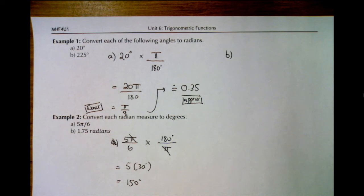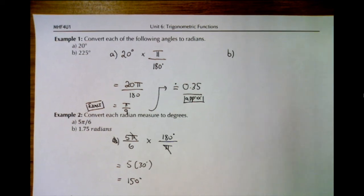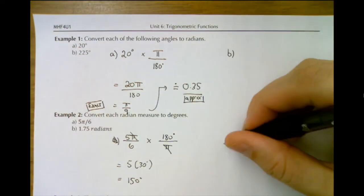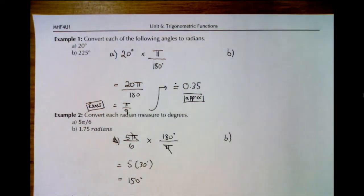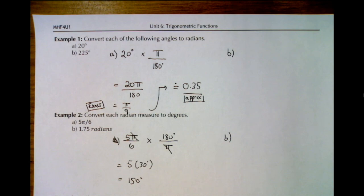That's it for what radians are and how to convert between the two. Try the b parts of both examples and check your answers on the course website. There's a part 2 to the video showing how to do example 3, which covers angular velocity.